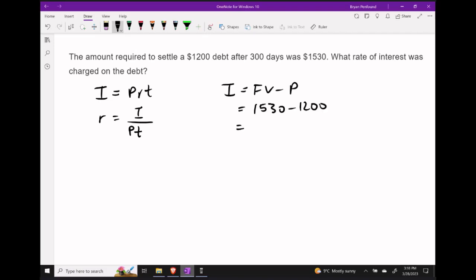Let's go ahead and calculate our interest by taking the future value and subtracting the principal amount. We know the future value is $1,530 and the principal amount was $1,200. Subtracting these two, we get interest of $330.